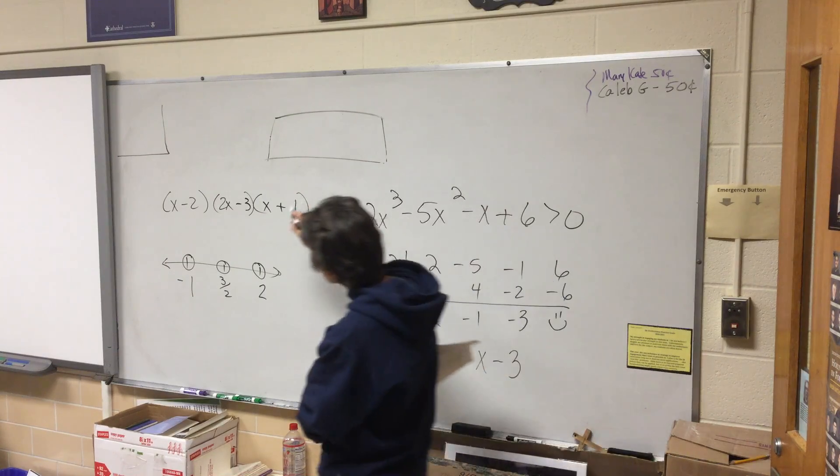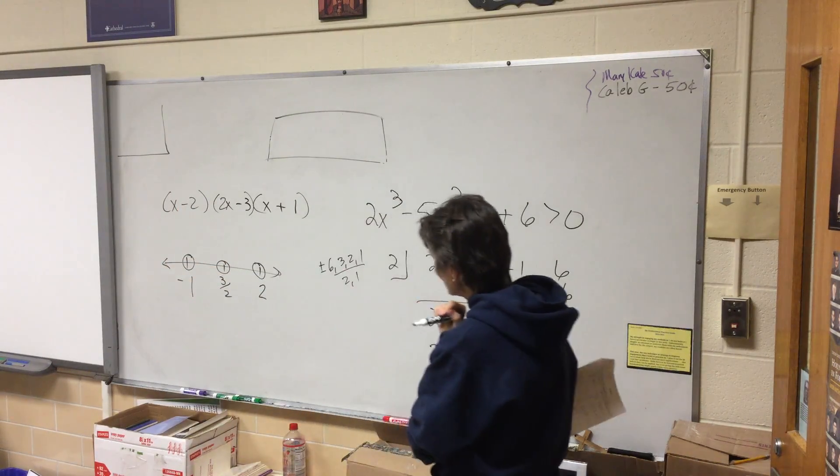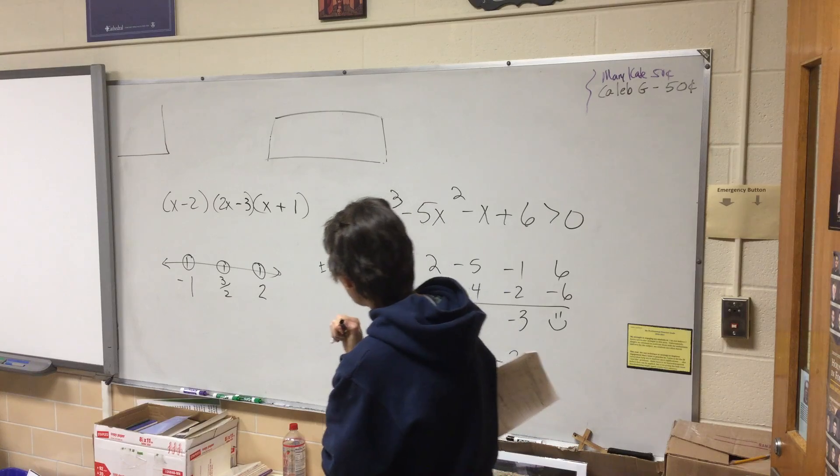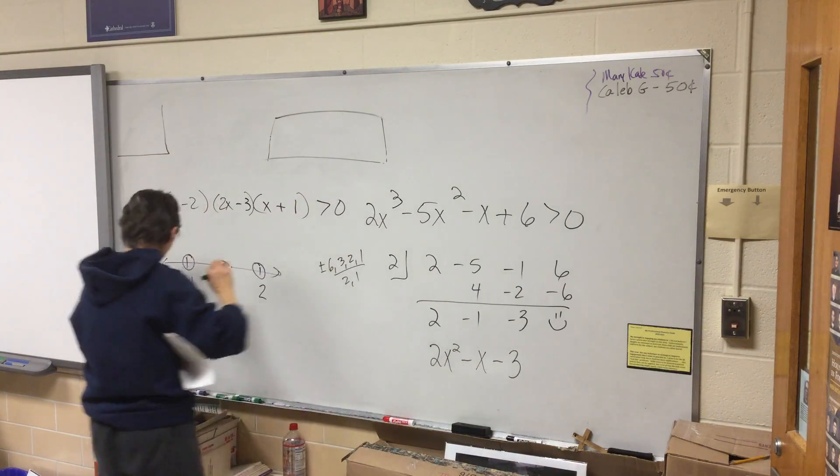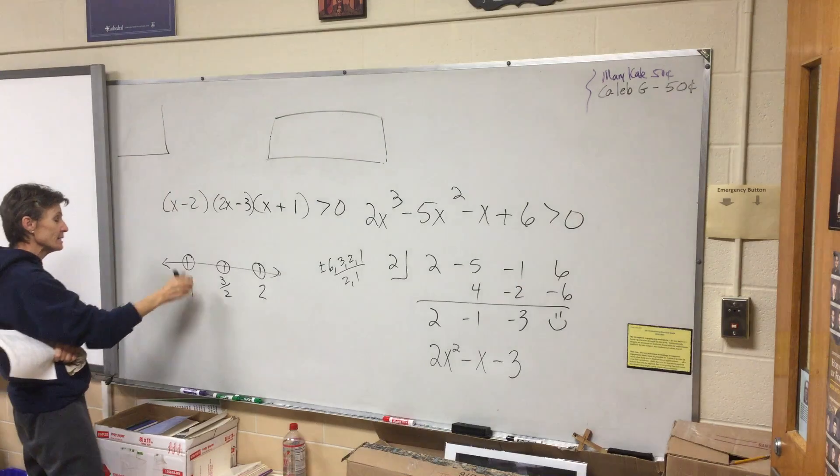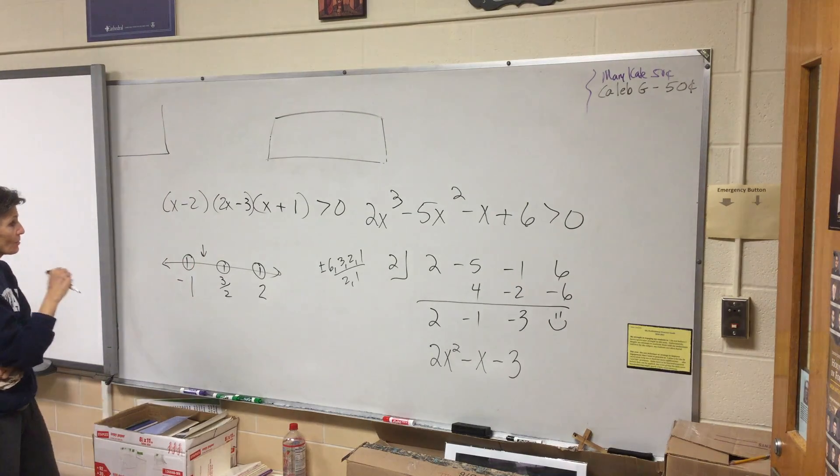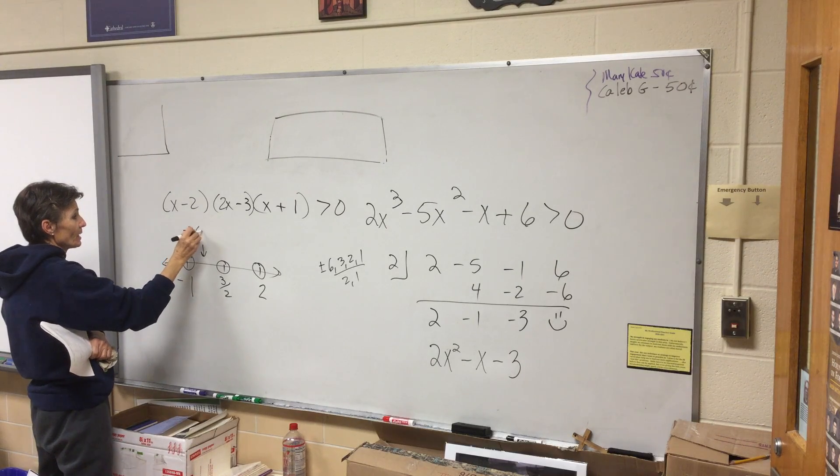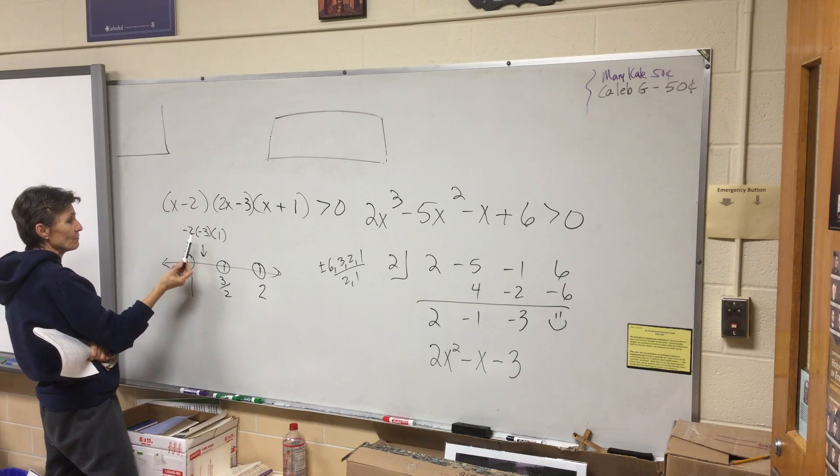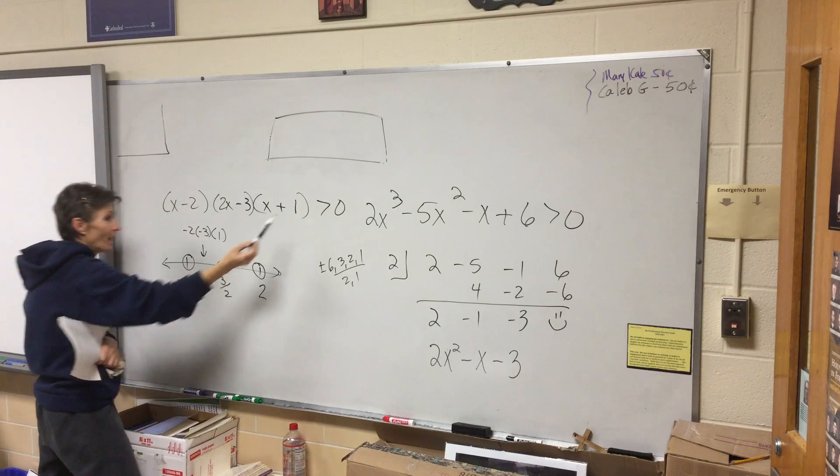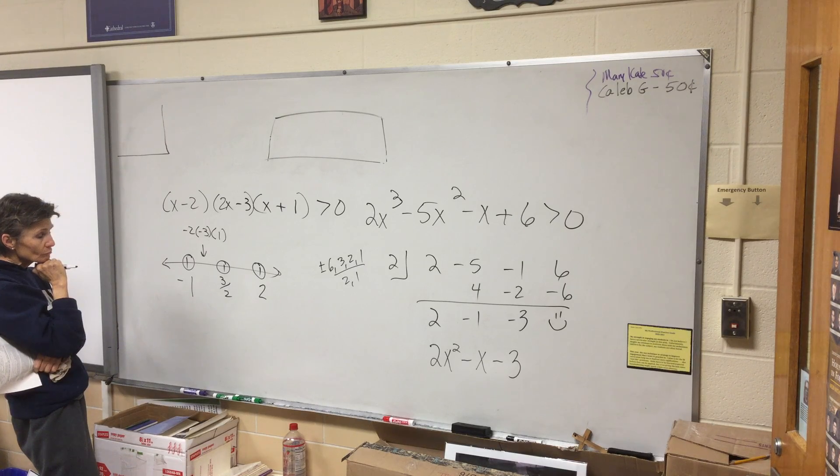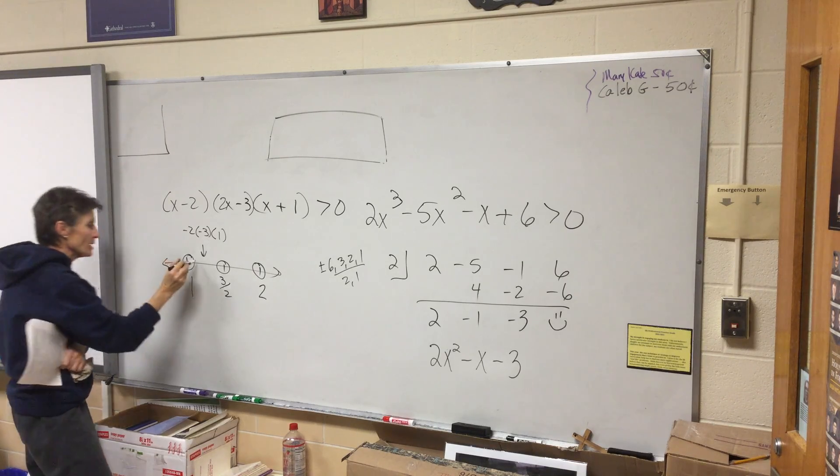Now notice, none of these are squared, so I can do my alternating thing. I just have to find one section. What should I plug in? Can we plug in zero? Absolutely, it's right in here. That's going to give me a negative two, a negative three, and a positive one. If I multiply negative two, negative three, and positive one, do I get greater than zero?